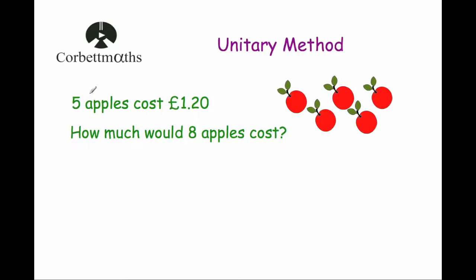Here's a typical question: five apples cost one pound twenty. The question says how much would eight apples cost? What we're going to do is divide one pound twenty by five — that will tell us the cost of one apple — and then multiply that cost by eight to find the price of eight apples.